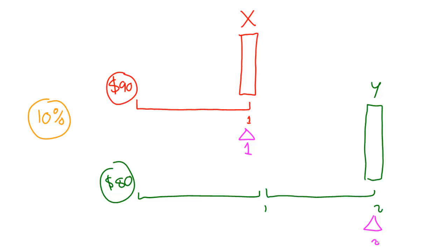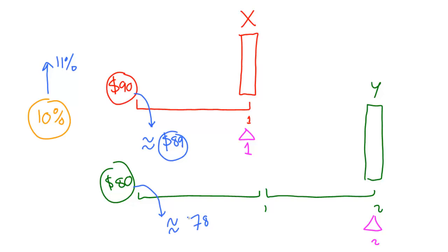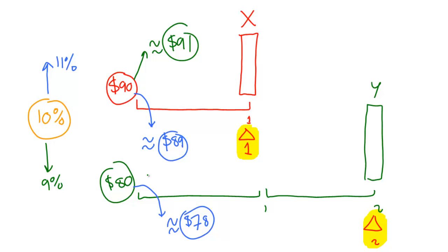Now, what some people noticed was this: if interest rates went up by 1% to 11%, then this bond would go down to approximately $89, and this one would go down approximately $2, to about $78. And if these interest rates went down to 9%, then this price would go up to approximately $91, and the one beneath would go up approximately $2, to about $82. There's something very suggestive going on with these durations and these price changes.